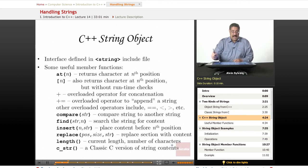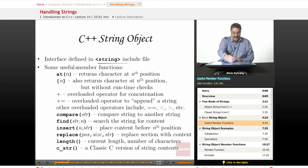Okay, the C++ string object, their interface is defined in the string include file. Here we have some useful member functions. At returns the character at the nth position,